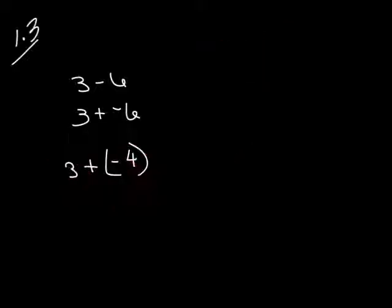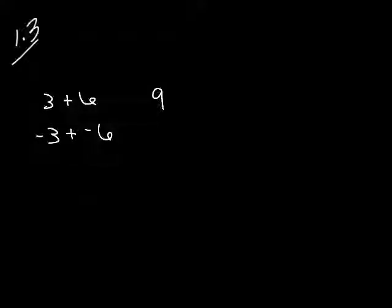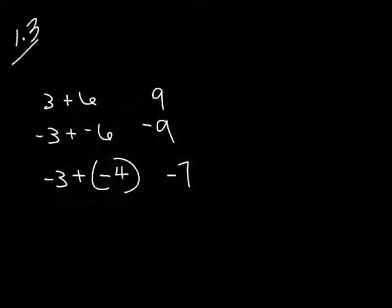When the signs are the same, we add the numbers and put the sign of those numbers on the answer. If I have 3 plus 6, signs are the same, so we add and put the positive sign on the answer. If I have negative 3 plus negative 6, signs are the same, so we add them and put the negative sign on the answer. Similarly, negative 3 plus negative 4: signs are the same, add the numbers and put the sign on it.